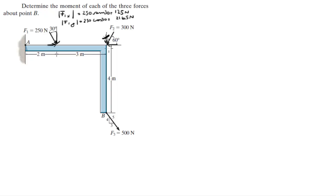But the Y doesn't really matter because it aims straight at the point that we're trying to calculate the moment of, therefore it creates no moment. So F2 in the X is the only one we care about and it has a magnitude of 300 newtons times the cosine of 60.